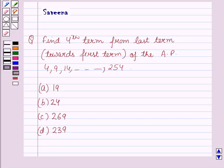4, 9, 14 and so on up to 254. The options are: option A 19, option B 24, option C 269, and option D 239.